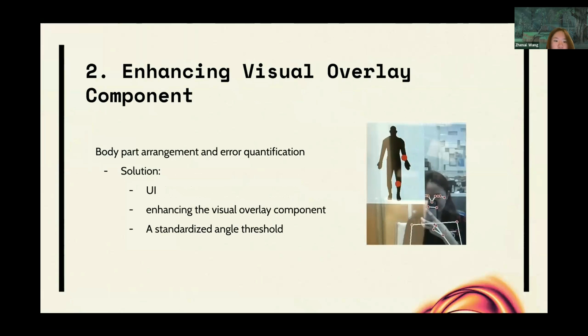Individual overlay components presented challenges in terms of body part arrangements and error quantification. By enhancing the visual overlay component, we solved the problem. A body-centered studio layout ensures intuitive placement of body parts on the UI. A standardized angle threshold, like a 40-degree difference, serves to objectively quantify dance movement errors by comparing real-time significant observations to pre-recorded references.